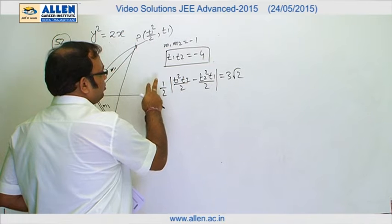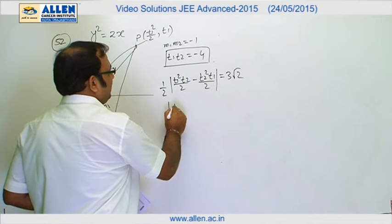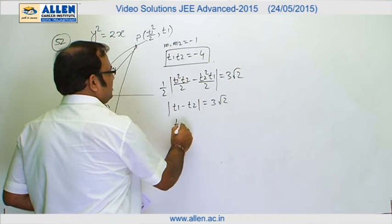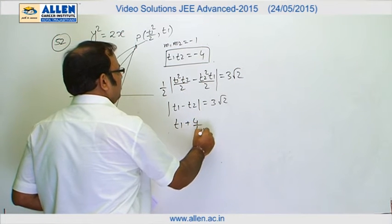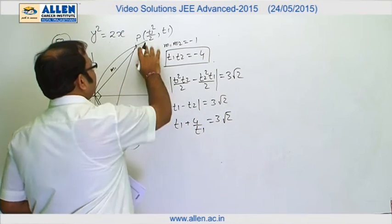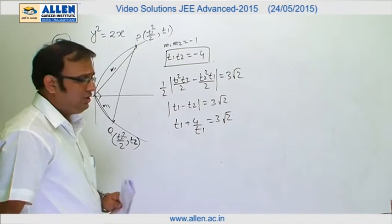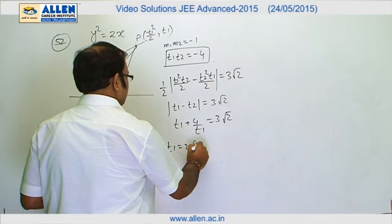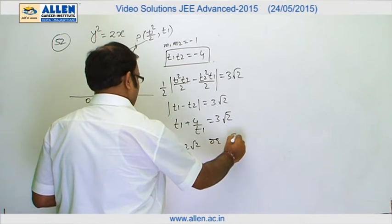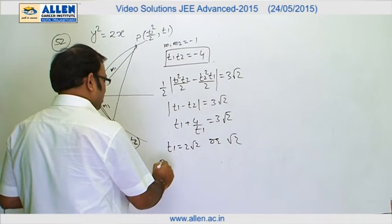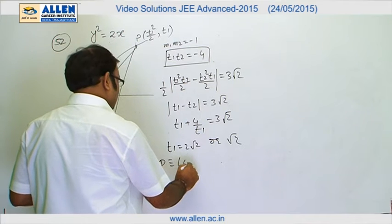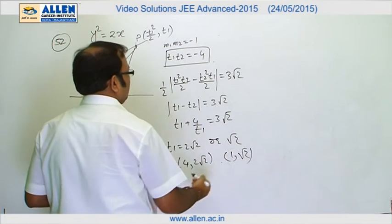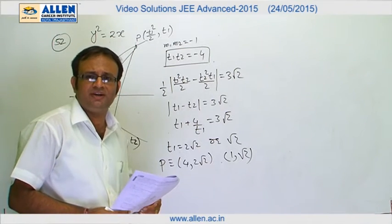Now we have to just simplify this. If we can pull out t1 into t2, this is t1t2 by 4, so that gets cancelled and we are left with |t1 - t2| = 3√2. So I can say that |t1 + 4/t1| = 3√2 as t1 lies in the first quadrant. Now this is the equation and we can simplify this equation to get t1 as 2√2 or √2, and from there possible coordinates of point P will be (4, 2√2) or (1, √2). So I think this question is fairly straightforward and an easy question.